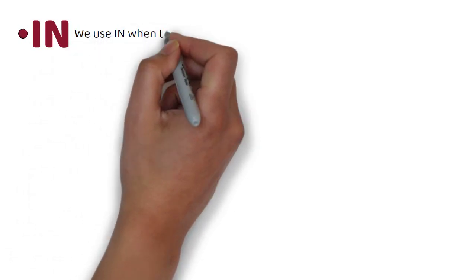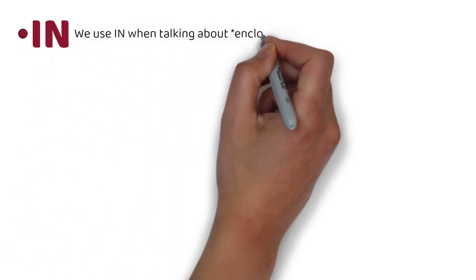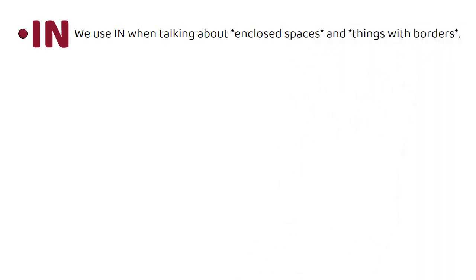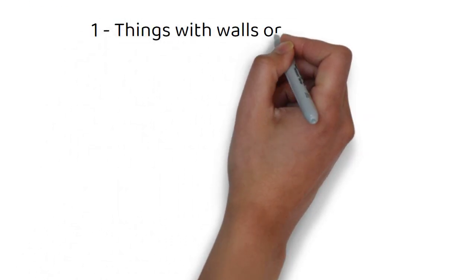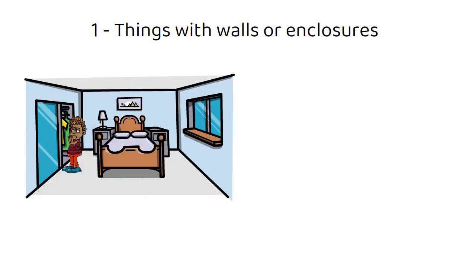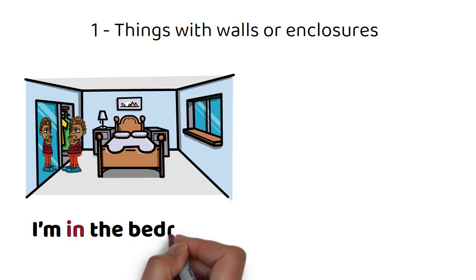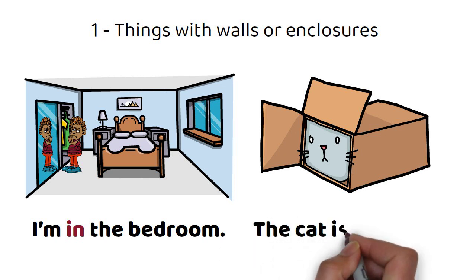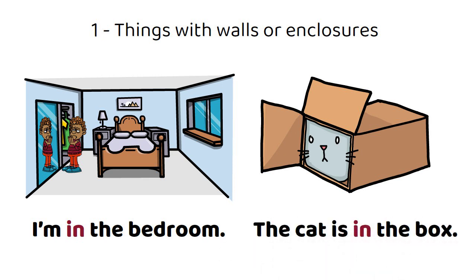We use in when talking about enclosed spaces and things with borders. Number one: things with walls or enclosures. For example, the cat is in the box.